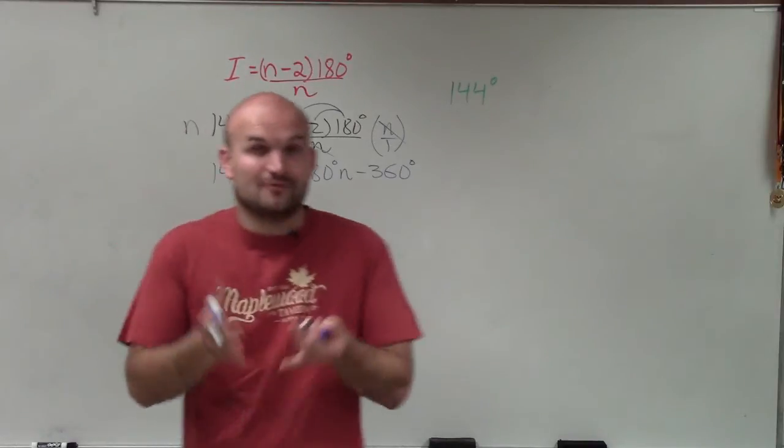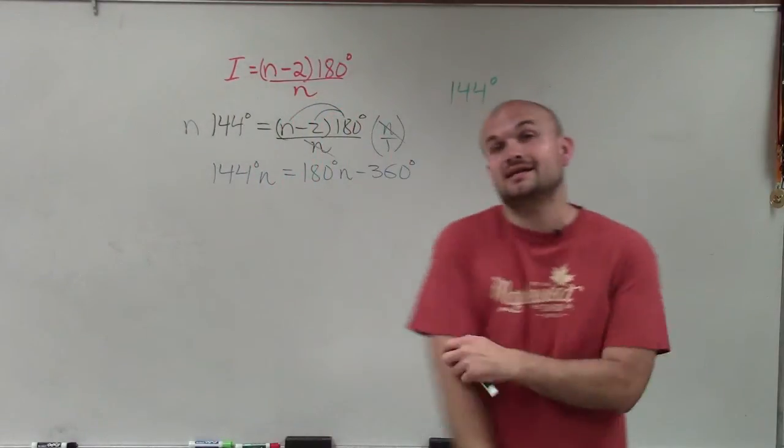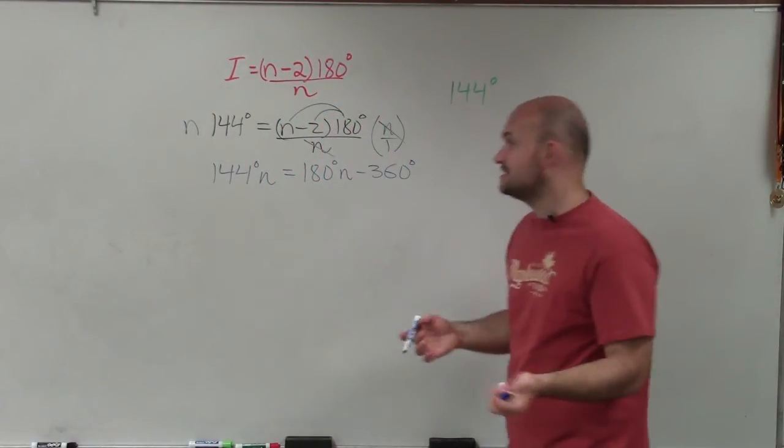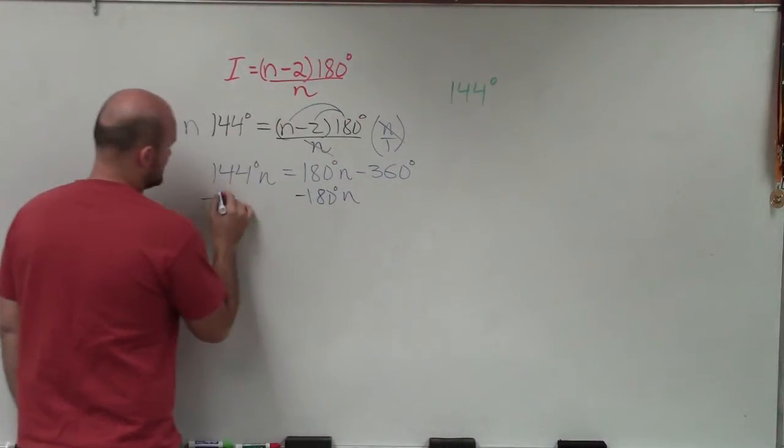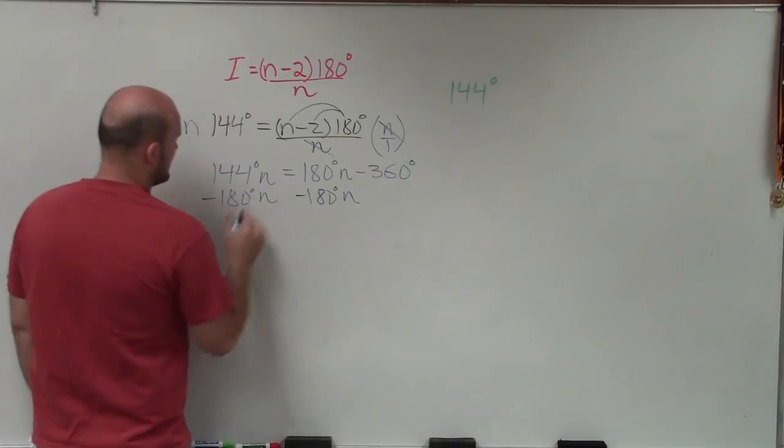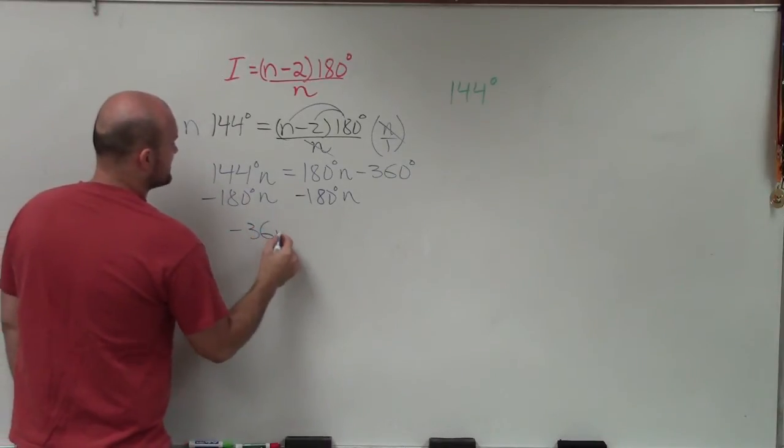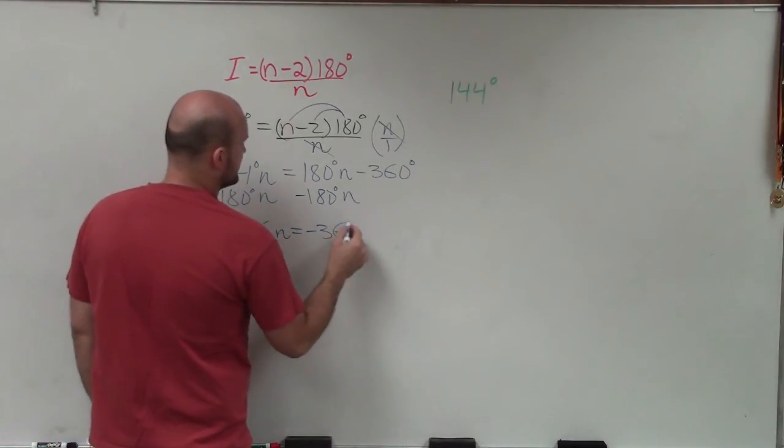Now to solve for n, I got rid of the n in the denominator as well as the n in the parentheses. Now I just need to get the n's to the same side. To do that, I'll subtract 180 degrees n on both sides, and I get negative 36n equals negative 360 degrees.